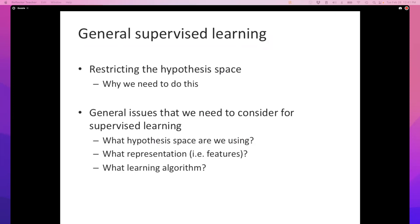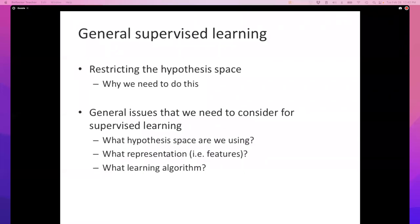Generalization is the only true goal of machine learning — there's no reason to just explain training data because we already have it. This is a key difference from statistics. Given we must restrict the hypothesis space, we still need to answer: what hypothesis class to use, how to represent instances as feature vectors, and what learning algorithm to use to explore the hypothesis space.